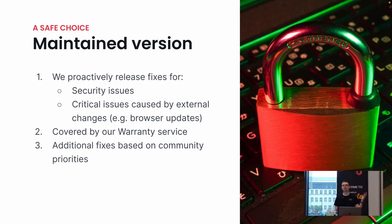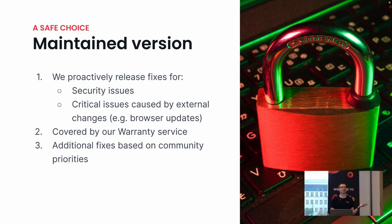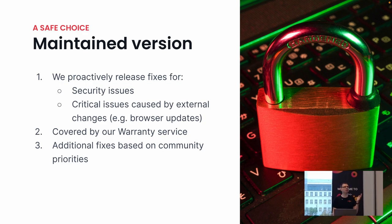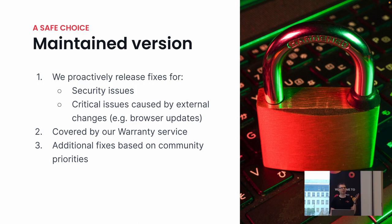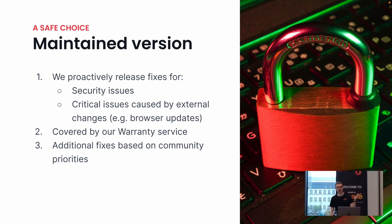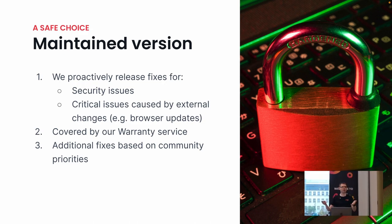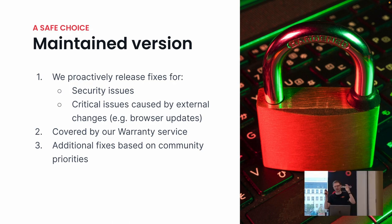When we talk about maintaining things we have released, every year we release over 100 new versions — we can't maintain all of them forever. Right now we're maintaining nine branches. If you talk with the users, that's not enough; if you talk with the engineers, they say that's way too much. So we need to find some balance.